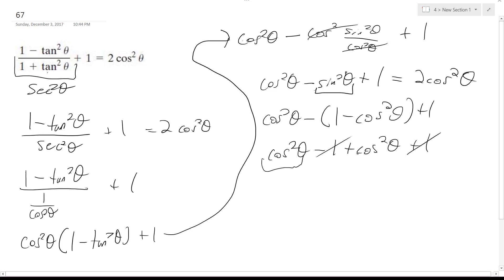You add the 2 cosines together and we get 2 cosine squared theta, which is equal to 2 cosine squared theta.